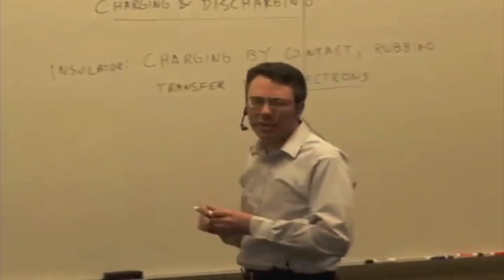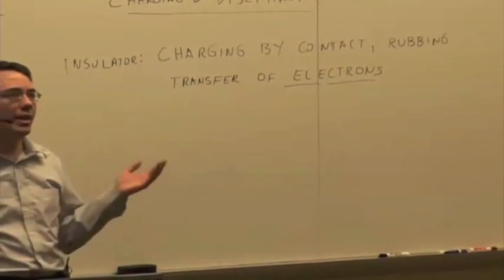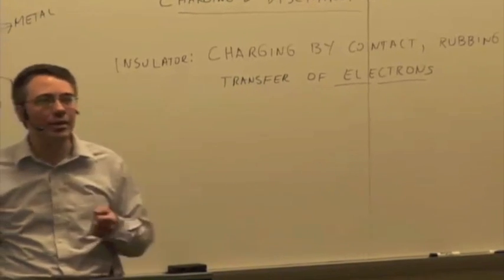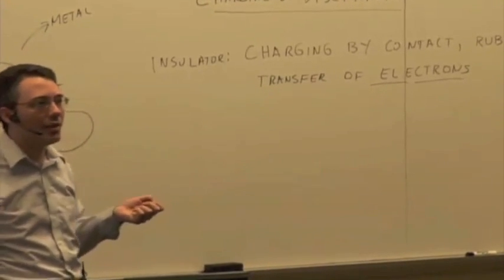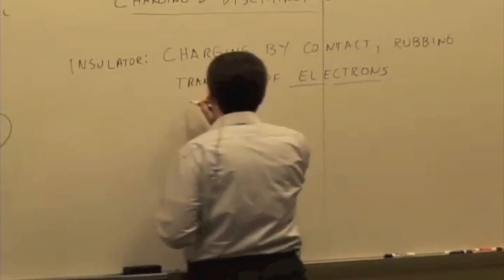Or what else could be transferred? We said what couldn't be transferred was bare protons ripped out of the nucleus, right? But we could have a situation where instead of electrons, maybe we had ions. Yeah, ions could be transferred.